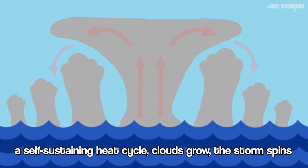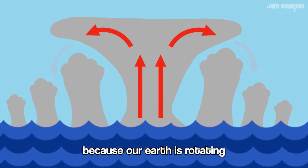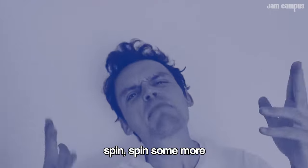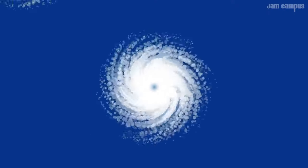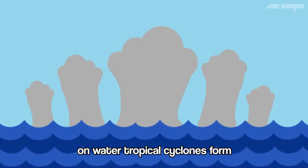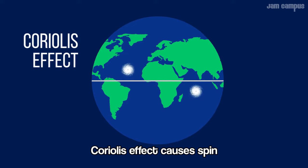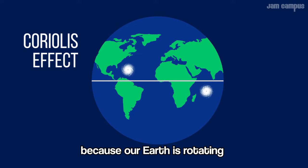Clouds blow the storm. It spins because our Earth is rotating. Spin, spin some more. And water — tropical cyclones form. Coriolis up there causes a spin, cause our Earth is rotating.